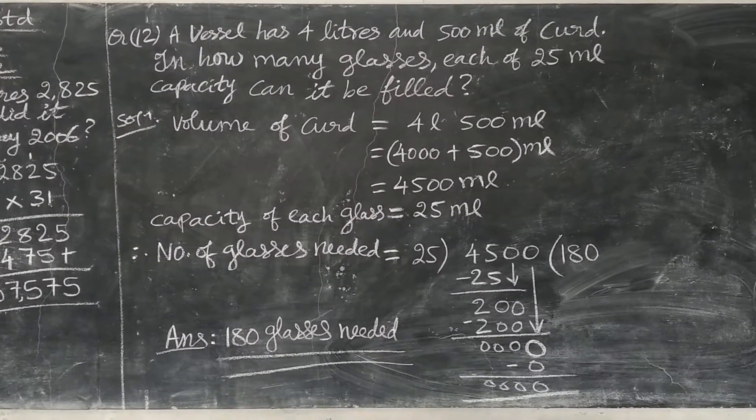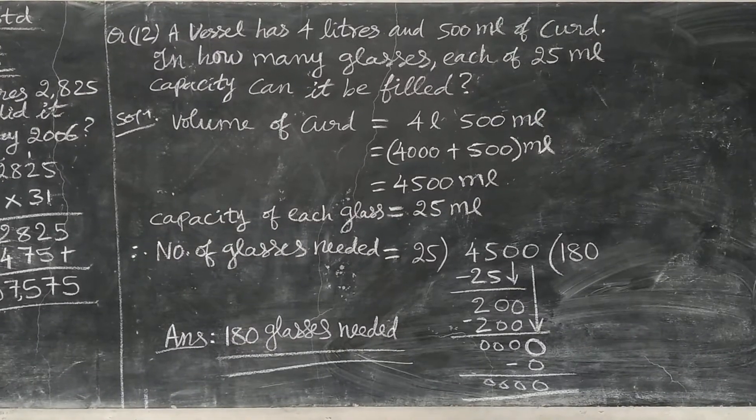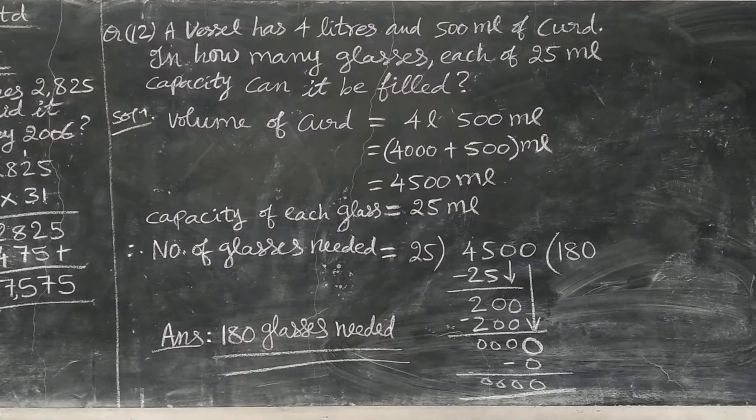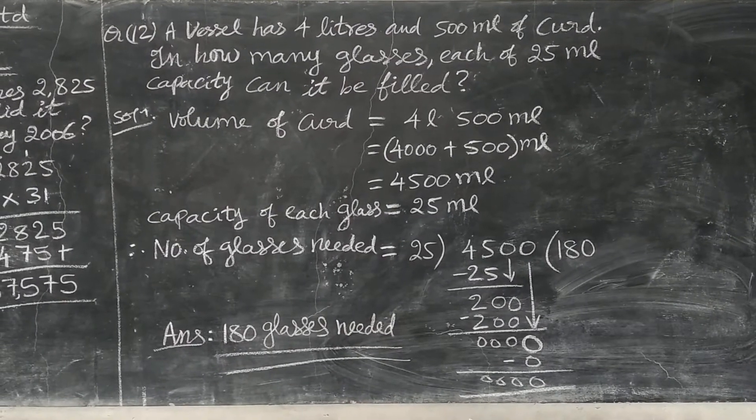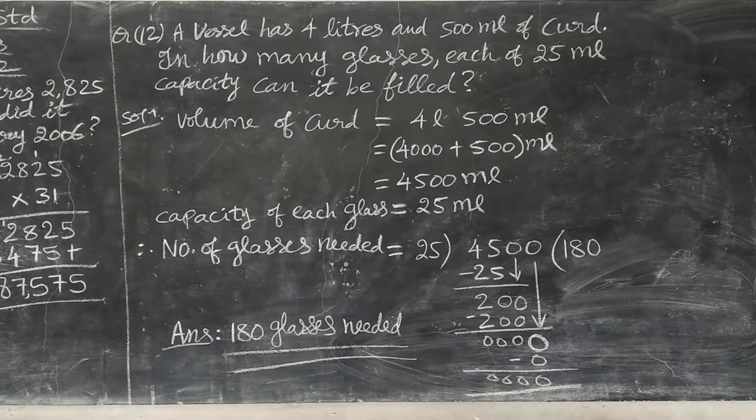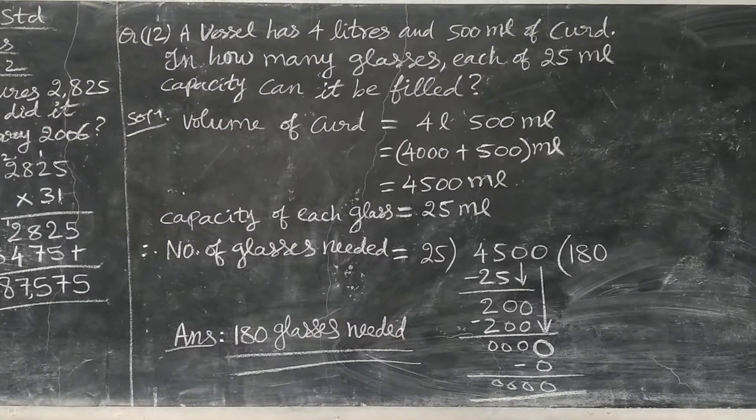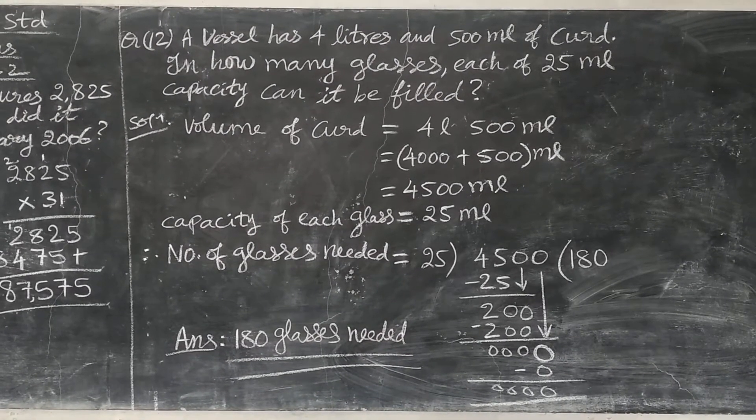4 liter means 4000. Below I have written, 4000 plus 500 milliliters is also there. That you have to add. Totally you will get 4500 milliliters of curd.